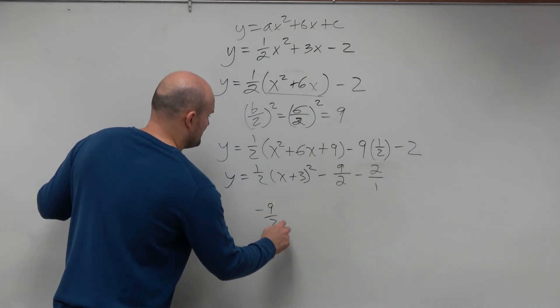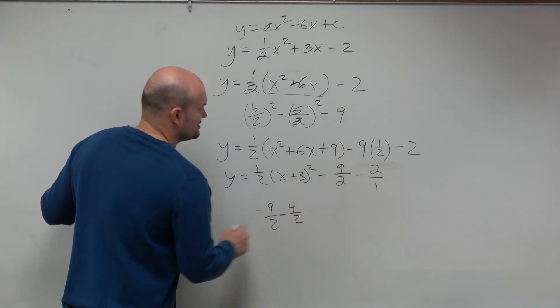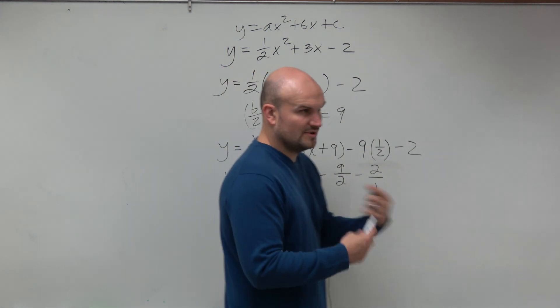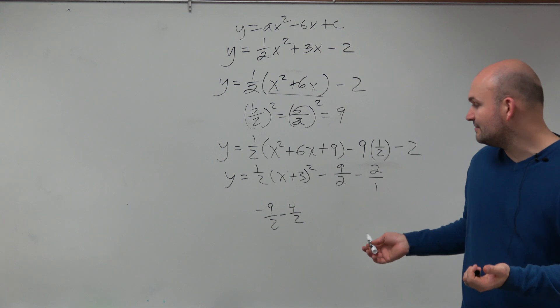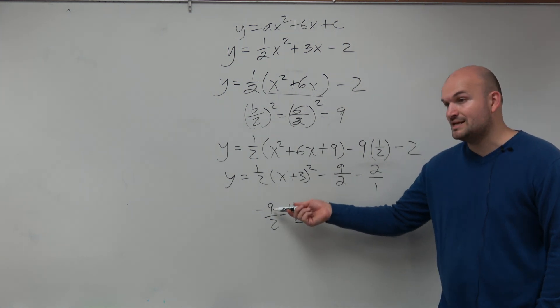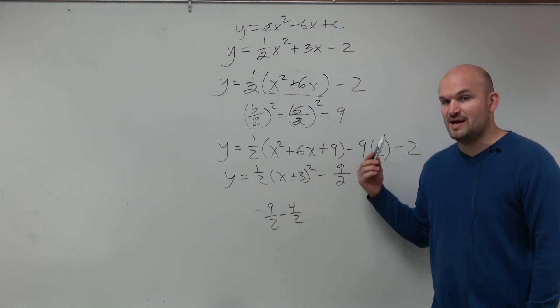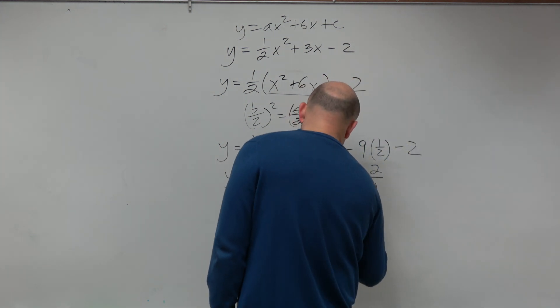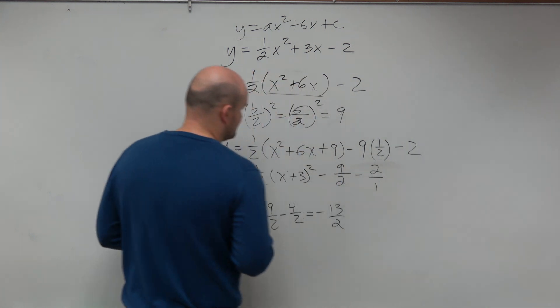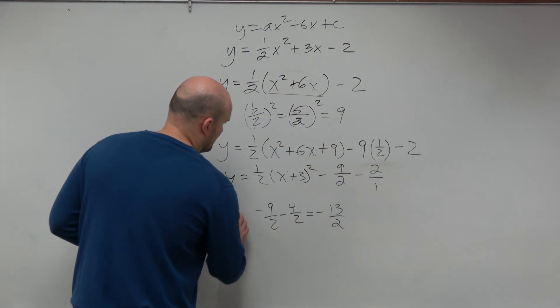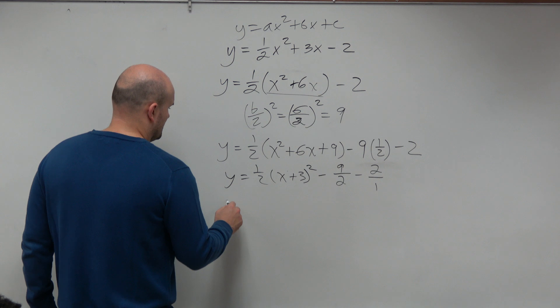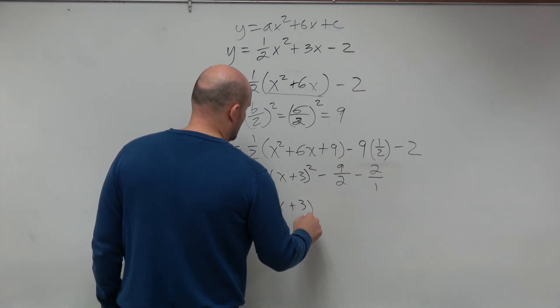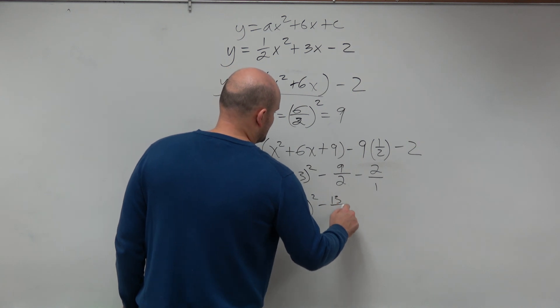Guys, let's not make this crazy math. Just rewrite 2 as negative 4 over 2. Just replace 2 as negative 4 over 2. Now they have the same denominators. So you combine the numerators. You owe me $9. You borrow 4 more dollars. You now owe me $13 over 2. So that will be our final answer. So y equals 1 half times x plus 3 squared minus 13 over 2.